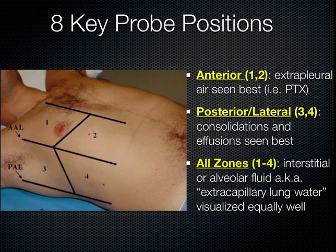It's important to scan all eight lung zones to evaluate for a complete chest exam — two anterior and two posterolateral lung zones on each side. All zones should be equally evaluated, taking but a few seconds each. Anteriorly is the best place to look for pneumothorax in a supine patient, as extrapleural air collects there. Posterolaterally, we can best see consolidations and effusions due to gravity dependence. In all zones, extravascular lung water — such as in diffuse pulmonary edema — should be equally visible.